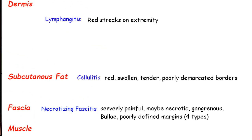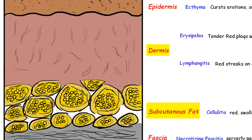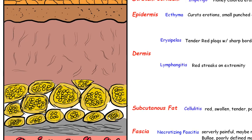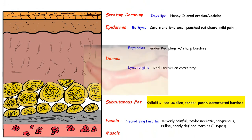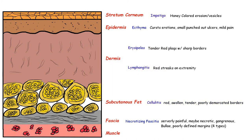GAS also causes cellulitis, which affects the dermis layer and subcutaneous fat. The area affected is red, warm, and usually pretty painful. Remember this requires a break in the skin, and it can progress to necrotizing fasciitis if not treated.